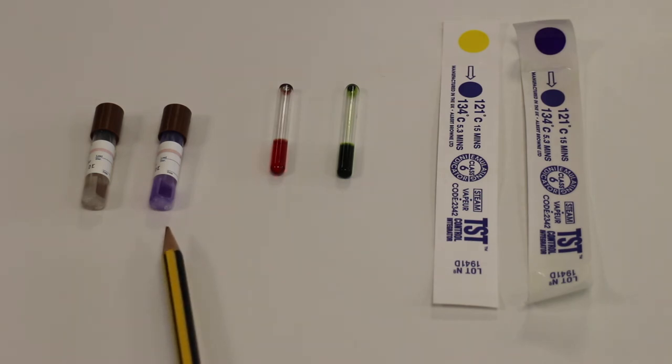If the autoclave process has been successful, then the spores cannot germinate once media is released over them. But if the autoclave hasn't worked, then the spores germinate and the media changes color, it goes to a yellow color and it's also cloudy.